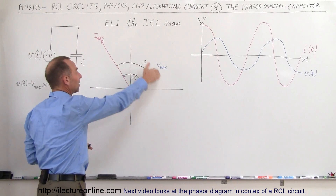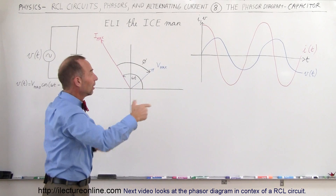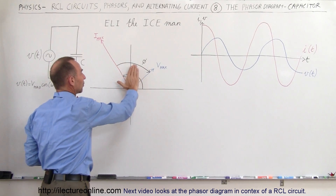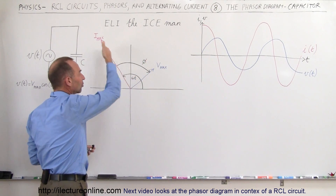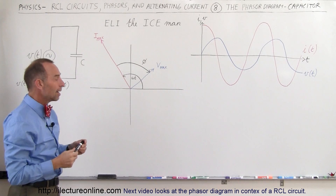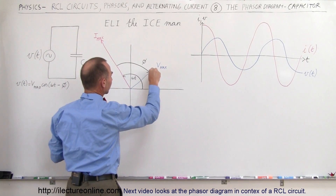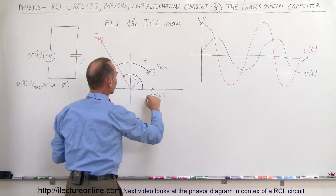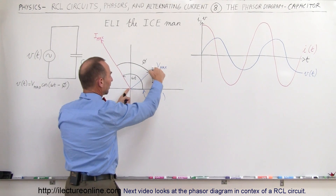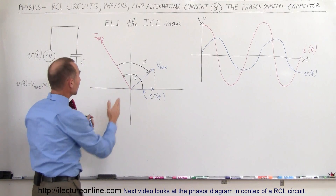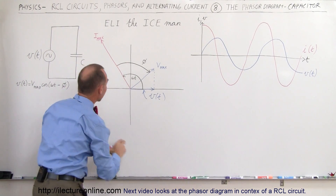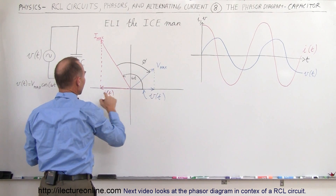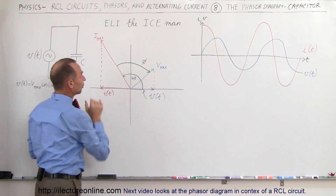Another way to show that is with the phasor diagram. As the current and voltage oscillate, the phasor diagram represents their projection onto the x-axis as they circle around the origin, which gives you the instantaneous voltage and current at any moment in time. Projecting the voltage down to the x-axis gives the voltage at that moment in time — you can see it's positive relative to the maximum voltage. Projecting the current onto the x-axis gives a negative current value at that same instant.